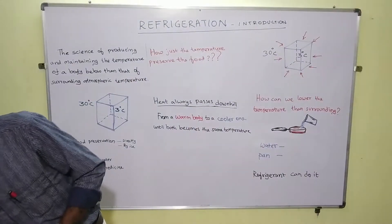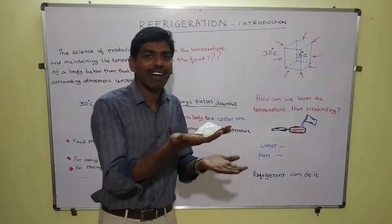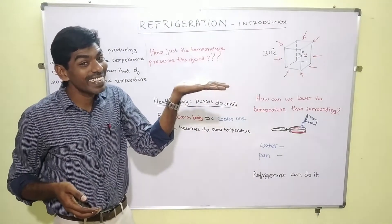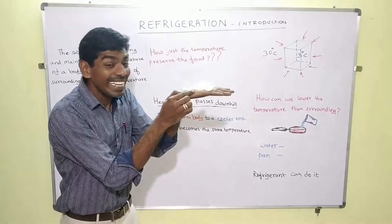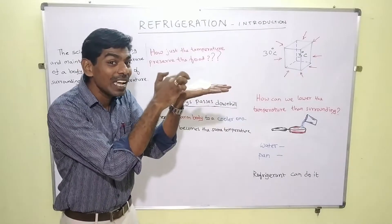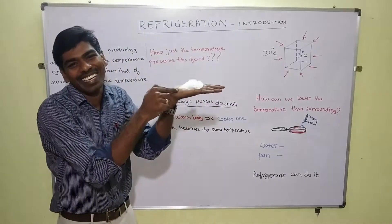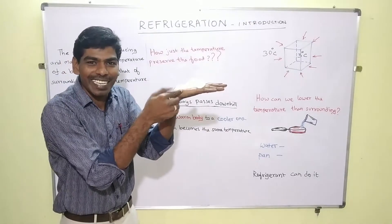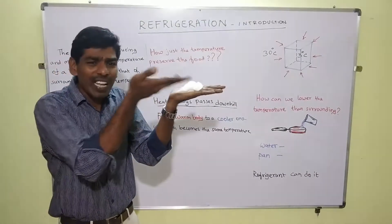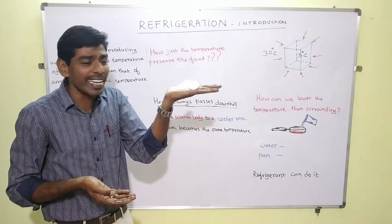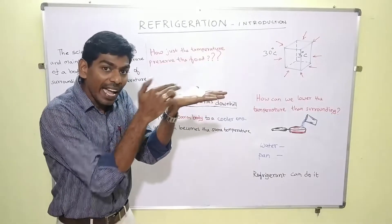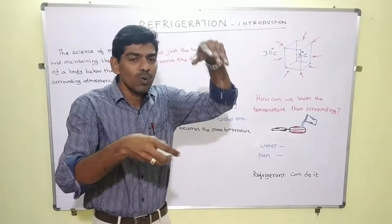For example, consider a piece of ice in my hand. What happens here? The heat from the hand passes into the ice, because the ice is at a much lower temperature than the hand. The body temperature is around 37 degrees centigrade, while the ice could be around minus 3 to minus 5 degrees centigrade — something less than 0 degrees. So the heat passes from the hand to the ice, and thereby it melts the ice into water.